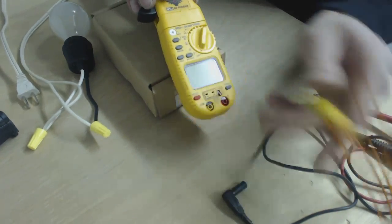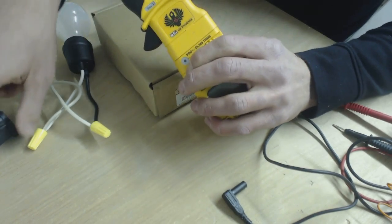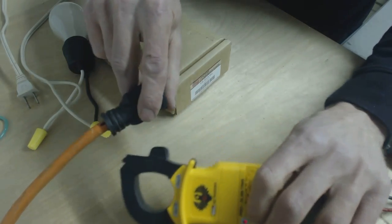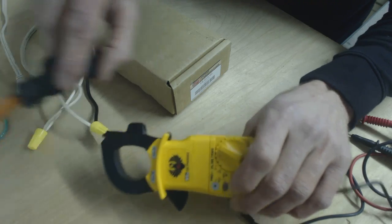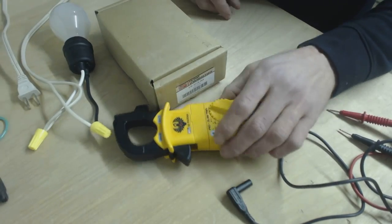And the last one that we can do is NCV, which is non-contact voltage. If you put this meter next to a wire that's live, it will make that noise. That's it. Stay safe.